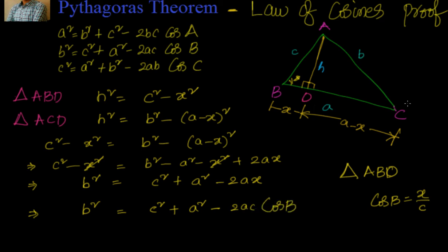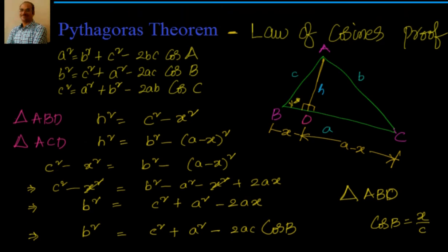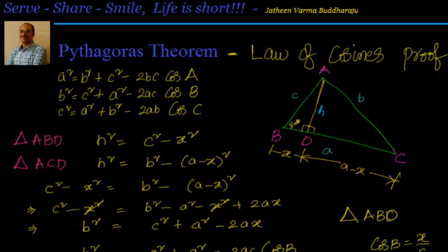Now instead of a, if you drop a perpendicular to AC, that is nothing but measure of b, you will be getting other equations. So you can get all the three equations by using Pythagorean theorem.